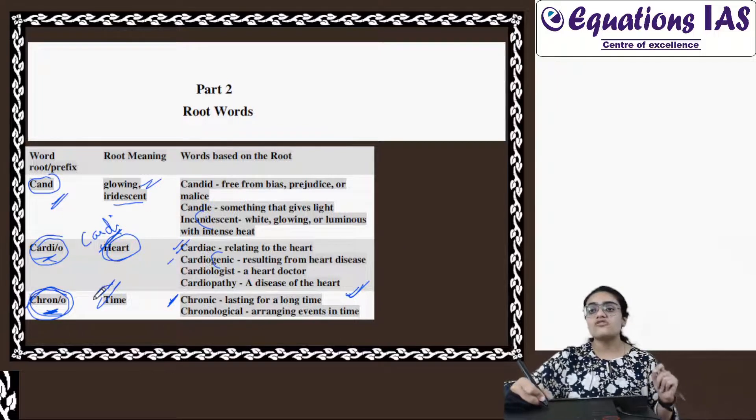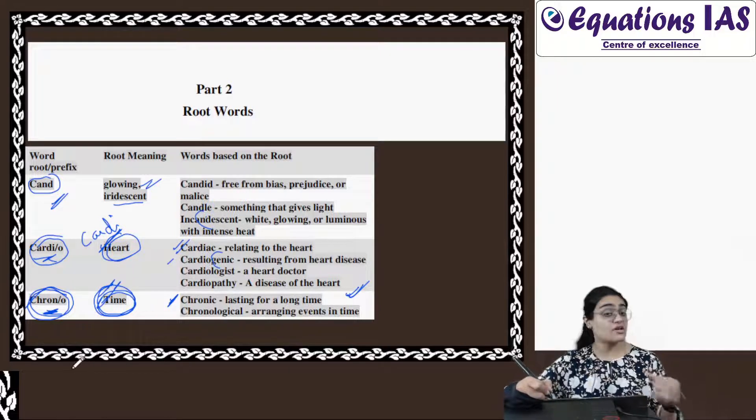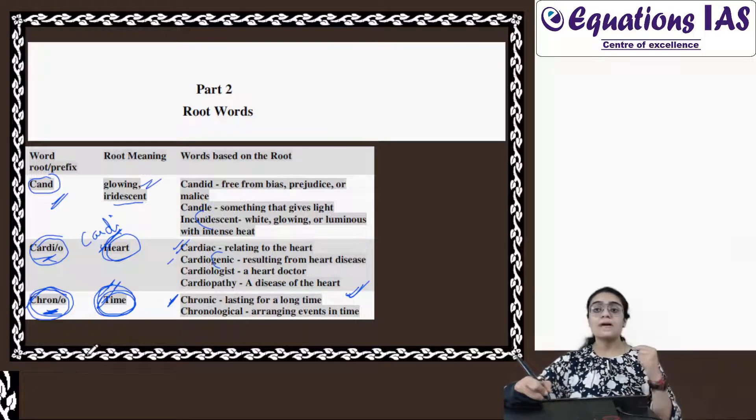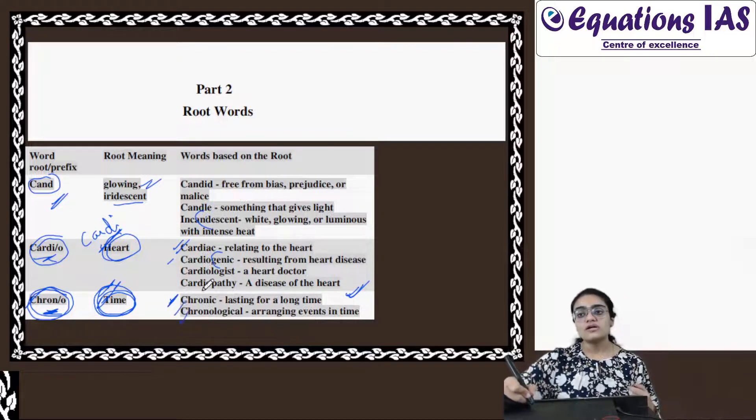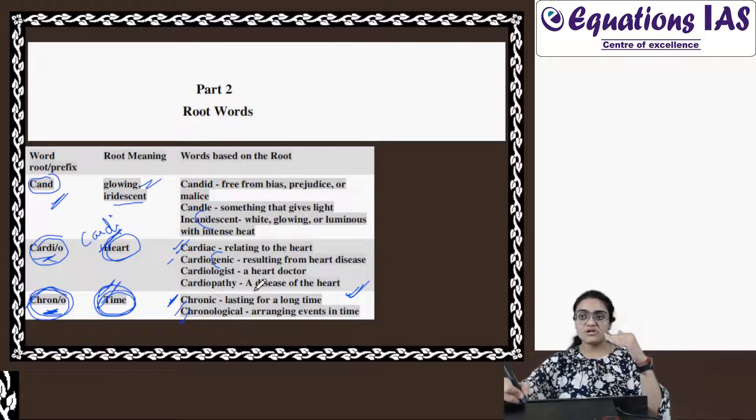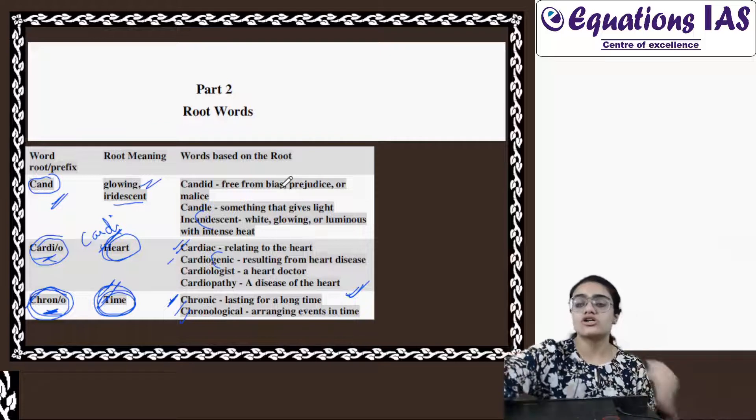So, whatever is passage of time. Chronic means it is something related to passage of time, not severity of something, but time. Chronological. Chronological means arranging as per the events - jaisa jaisa events ho raha hai, in that aspect arranging them. This is called chronological.